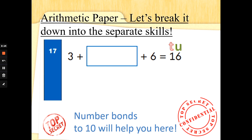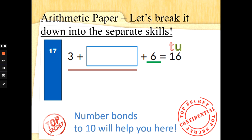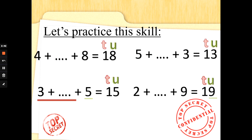Now sometimes they give you a missing number and they're trying to trick you. Look at this sum carefully: 3 add something add 6 is 16. 16 is 10 and 6, isn't it? And I've already got a 6 there, so now I only need to make the tens number. We need to make 10: 3 add 7 makes 10, so the missing number here would be 7. Splitting things into tens and ones helps you so much in maths!